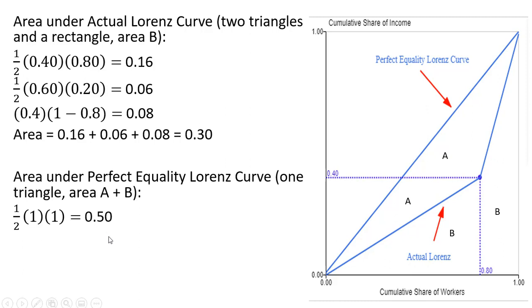So we did all the hard work—now we can solve for the Gini coefficient. The Gini coefficient can be thought of as area A divided by area A plus B. Notice area A, which we did not directly solve for—we solved for area B and area A plus B—but we can back into area A by taking area A plus B, which is 0.5, and subtracting area B, which is 0.3. So area A is actually 0.2. Dividing that by 0.5, we get a Gini coefficient of 0.4.